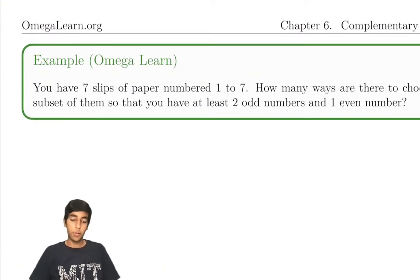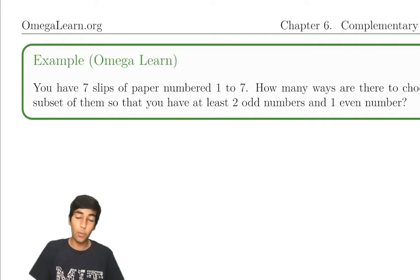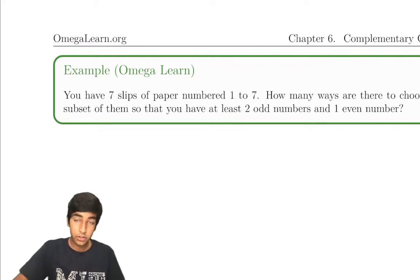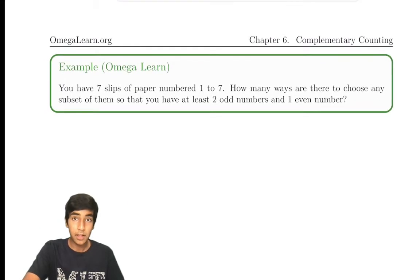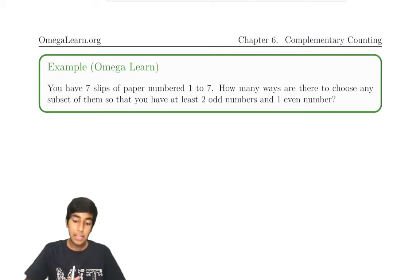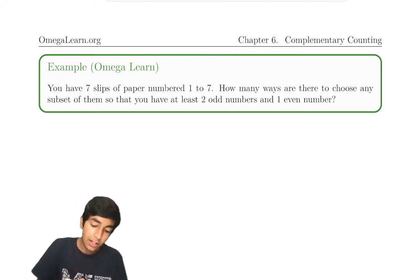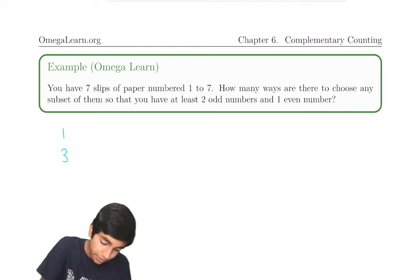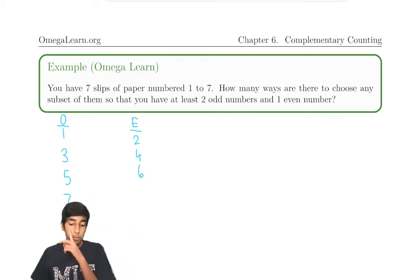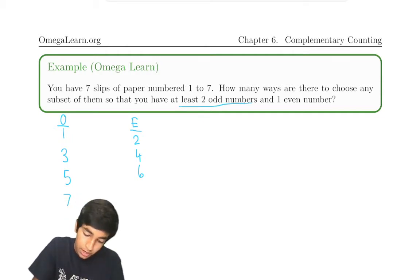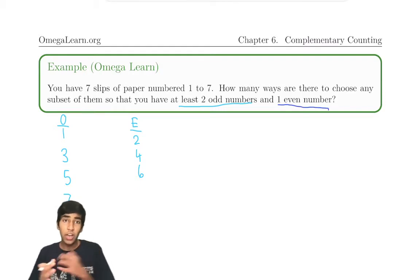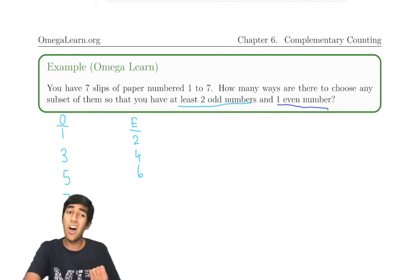Let's start off with this example. You have seven slips of paper numbered one through seven. How many ways are there to choose any subset of these slips such that you have at least two odd numbers and at least one even number? So let's divide one through seven into odds and evens. We must have at least two odd numbers and at least one even number. So we could do casework: one even number, two even numbers, three even numbers — that's going to take a long time.